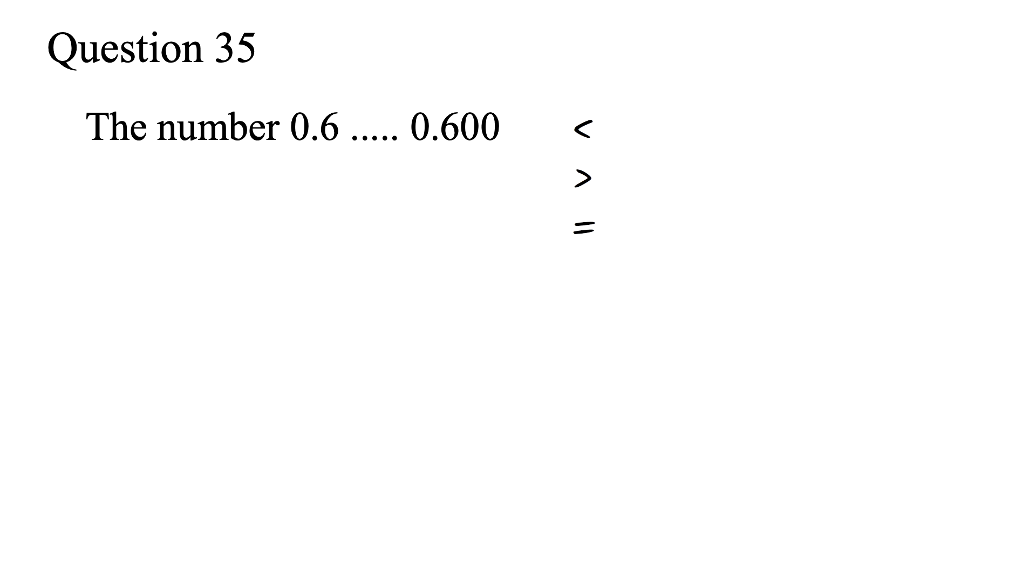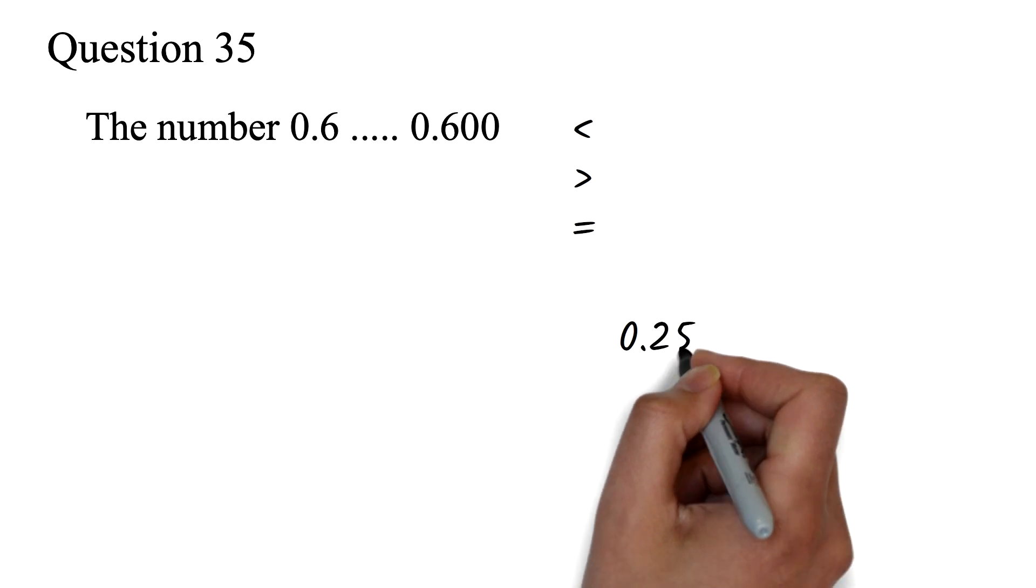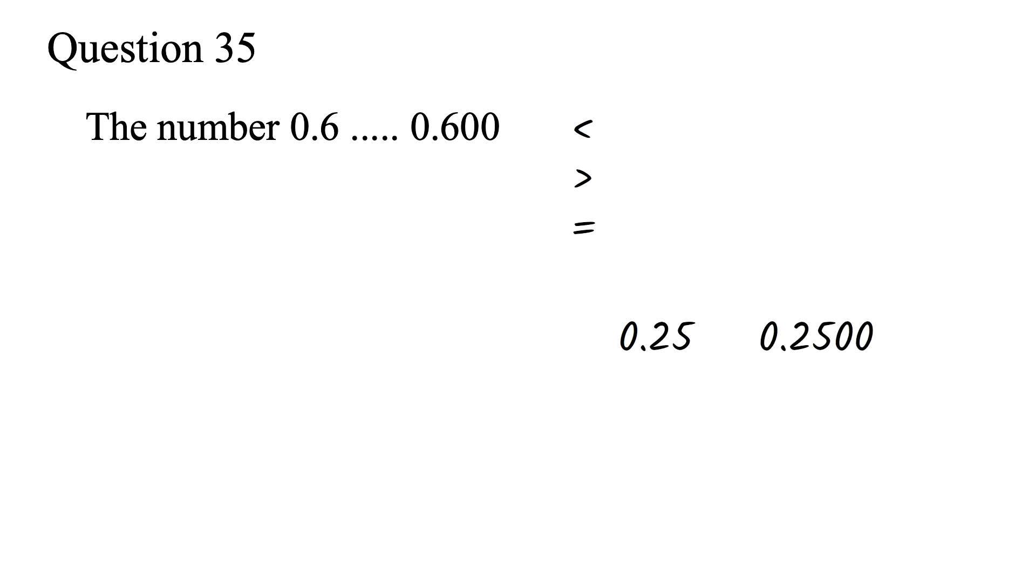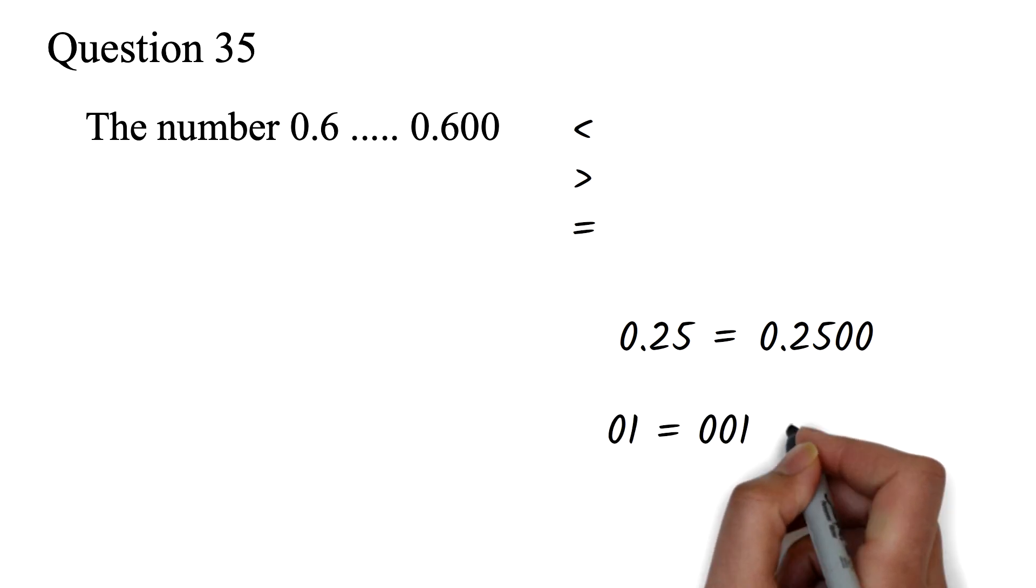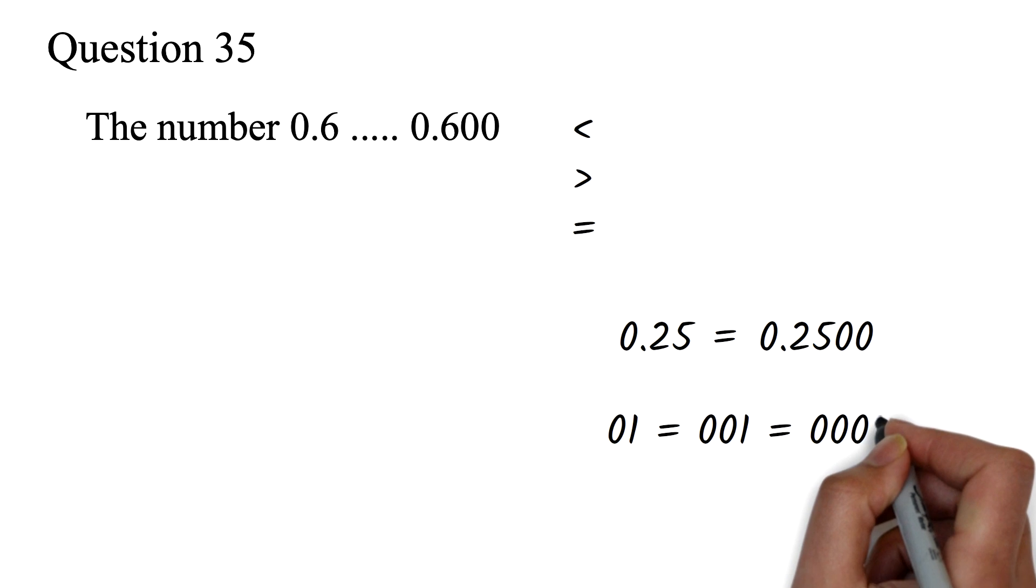When you have a decimal, you can add as many zeros as you want to the back and it won't change the value. So 0.25 and 0.2500 are the same. It's the same thing like the way you can add as many zeros as you want to the front of a number and nothing changes. So if you're number 01 or number 001 or number 0001, you're number 1.